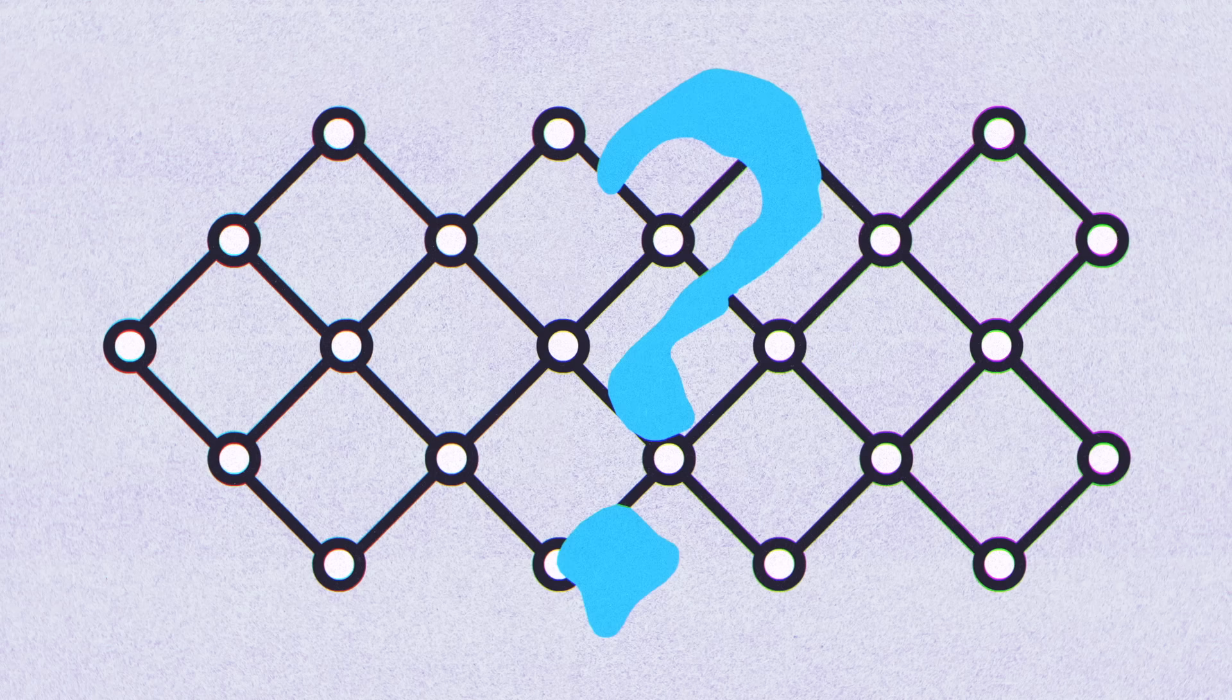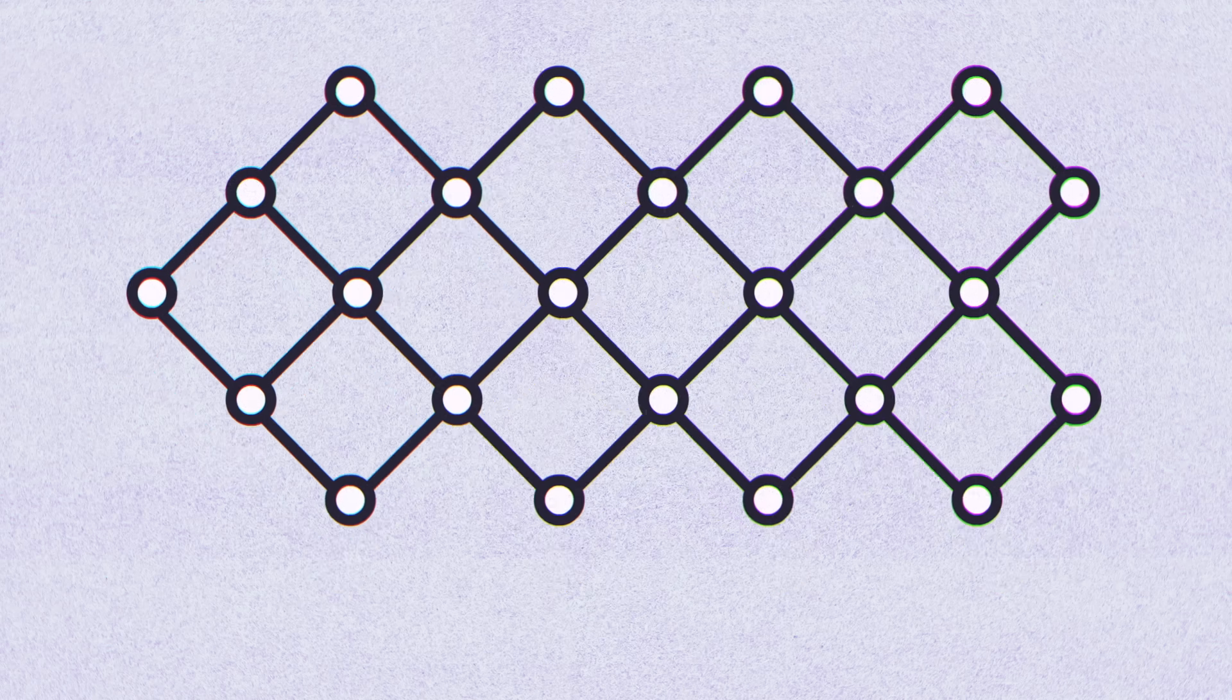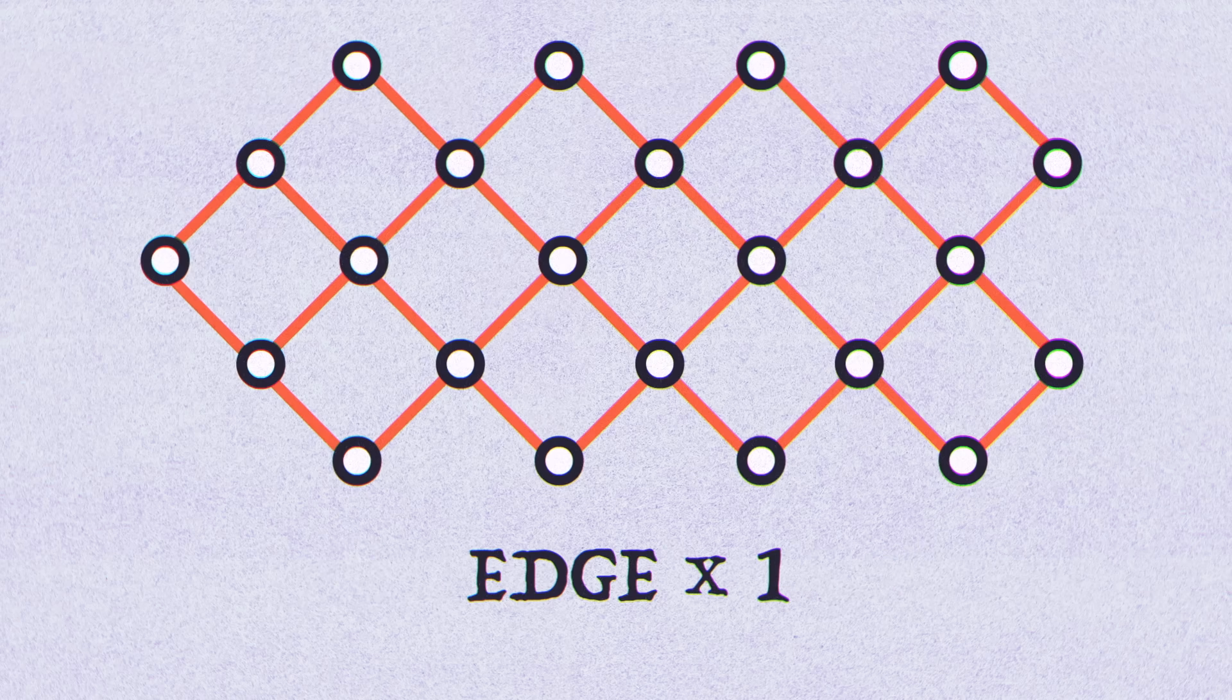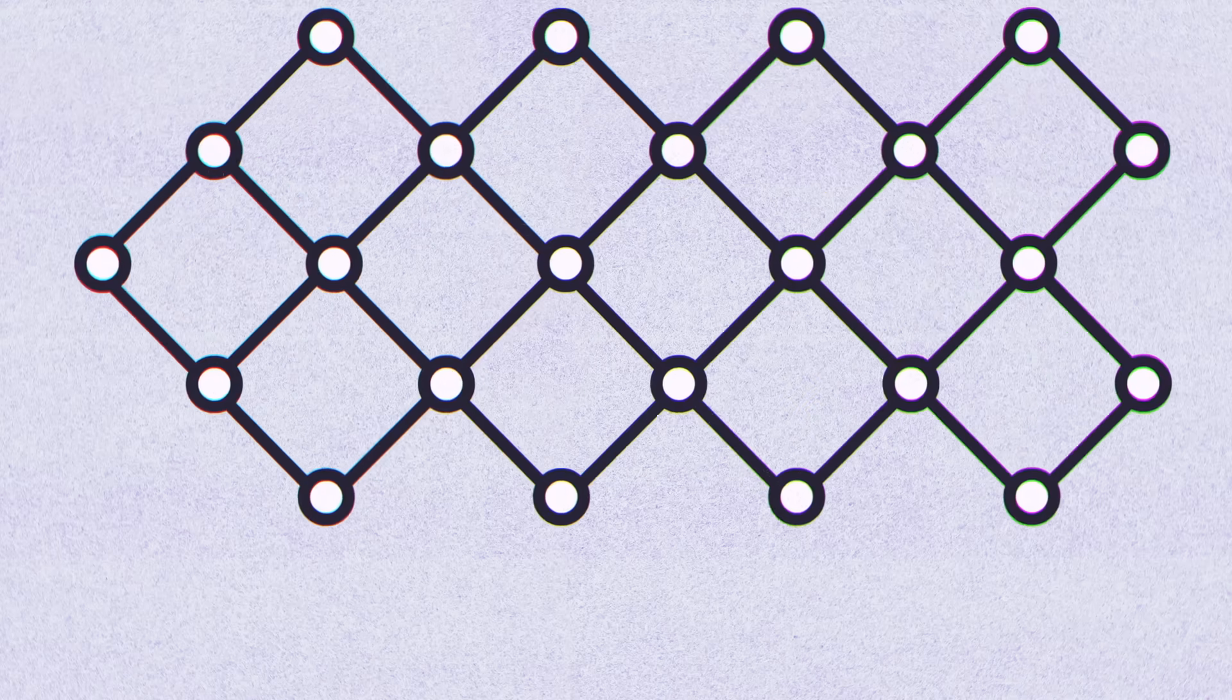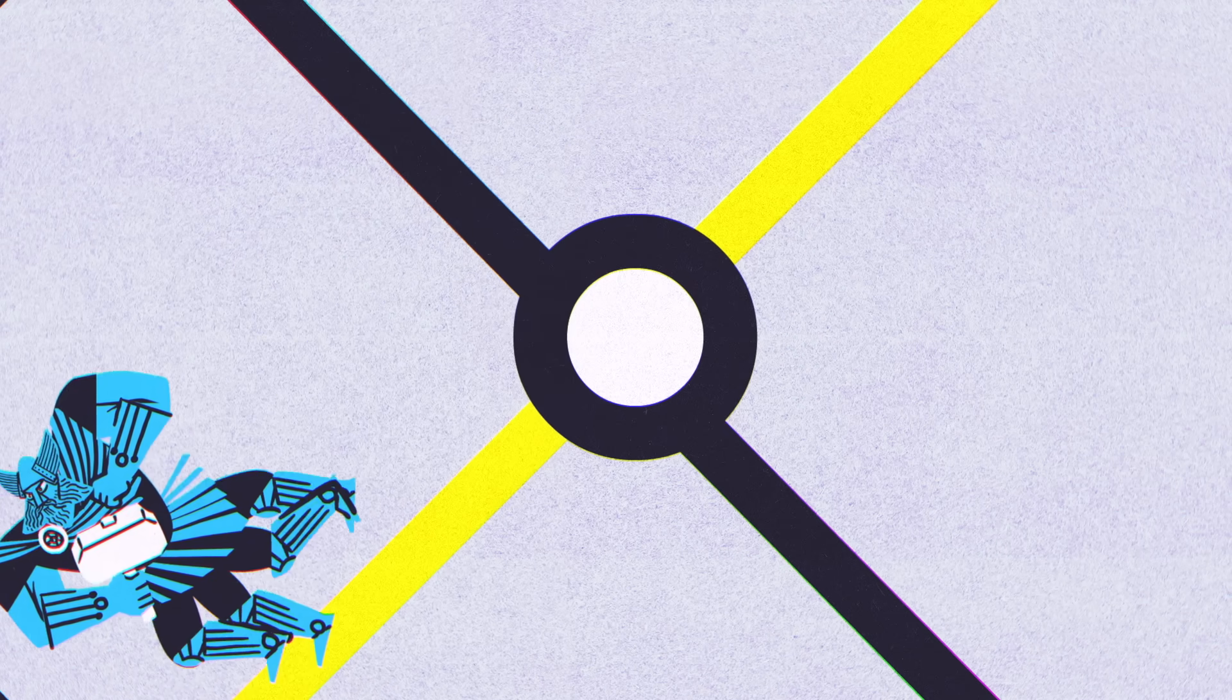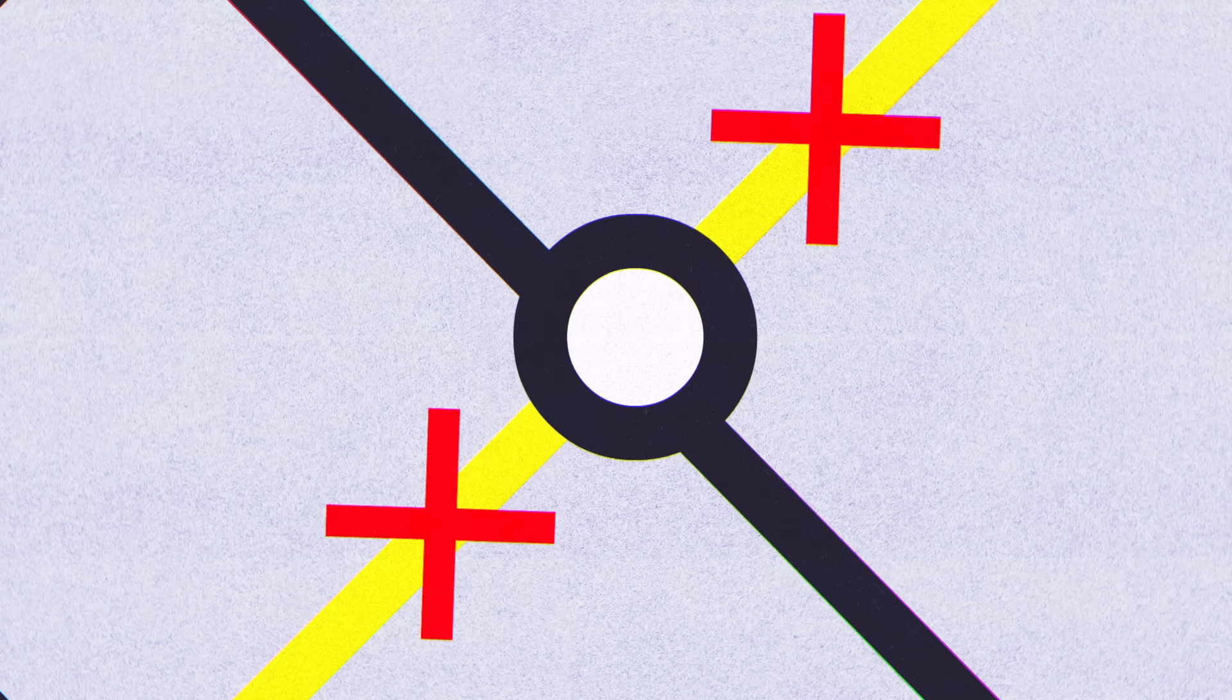We just need to figure out how to travel what mathematicians call an Eulerian path, which traces every edge exactly once. Instead of looking at the path as a whole, let's zoom in on a single node. During some moment in your run, you'll enter that node and then exit it. That takes care of two edges.